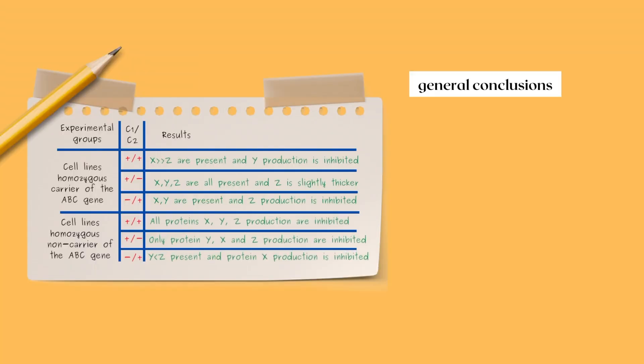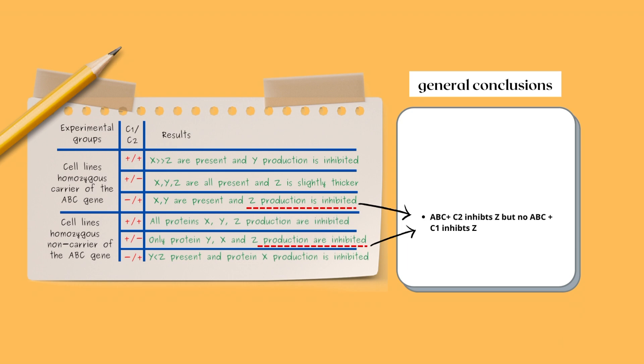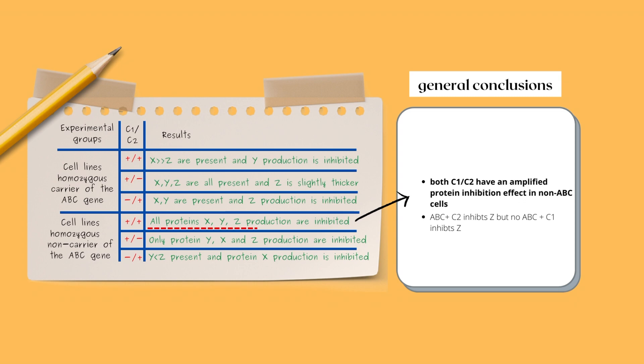The most important part. Putting meaning to the white lines. Making general conclusions can take some time, but it's important to look for patterns of protein production between chemicals within the same experimental group and across experimental groups. ABC cells with C2 don't make protein Z, but non-ABC cells with C1 instead don't make protein Z. In this case, protein Z production is inhibited, but with different chemicals.